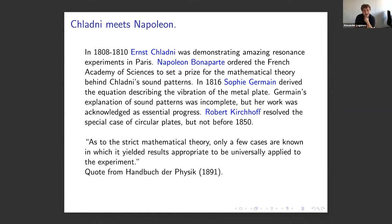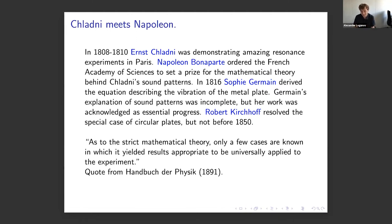Almost two centuries ago, Napoleon Bonaparte was visiting a meeting of the French Academy of Sciences. He saw this experiment and was so impressed that he proposed to mathematicians to explain what is happening there. The French Academy of Sciences set an award for this prize. There was very substantial progress due to Sophie Germain with a lot of help from Lagrange. What she did was basically derive the equation which describes those mysterious curves. Unfortunately, it's not an equation that you can solve explicitly - it formally describes the object but does not give immediate intuition.